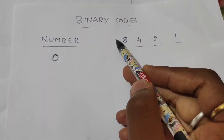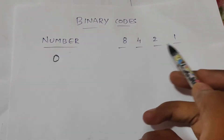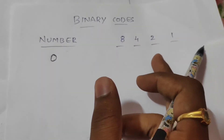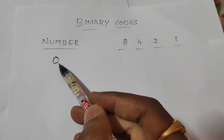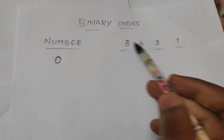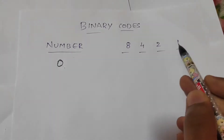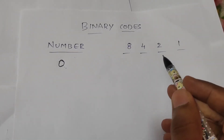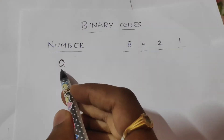We are going to write the numbers. We will write the code to convert the numbers. For example, suppose the number is 0. If it is 0, the number is added. The number 1 is represented, and we start from 0.